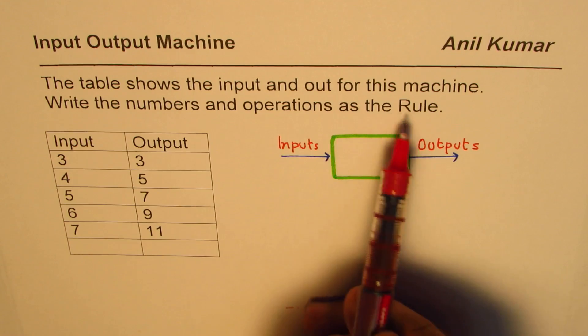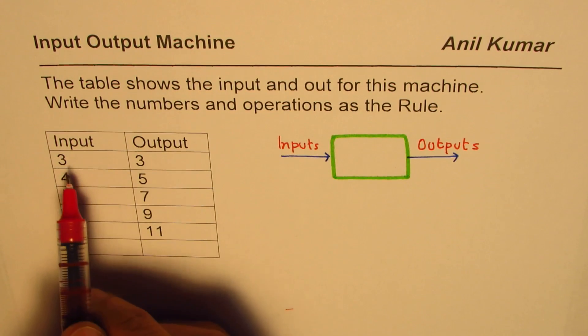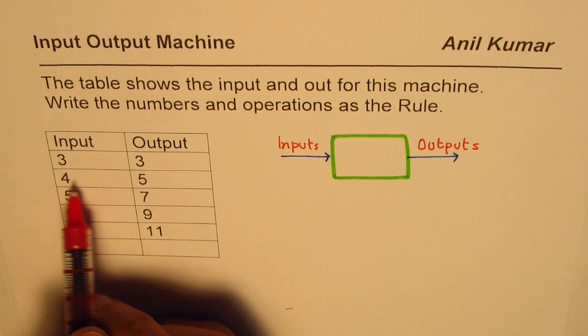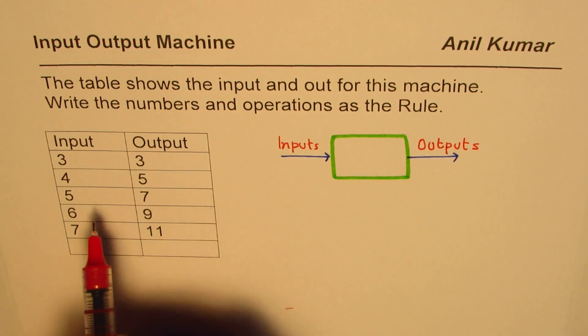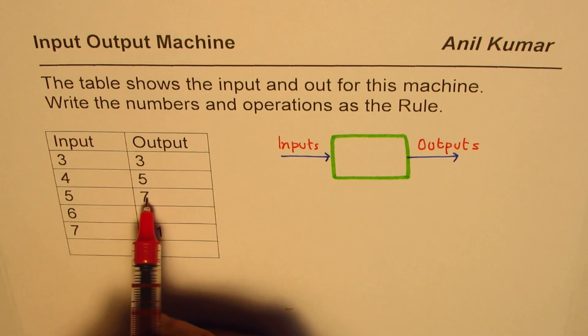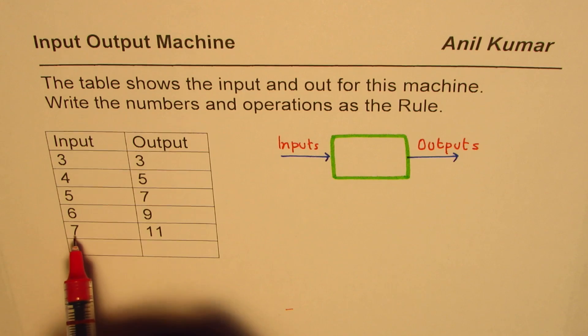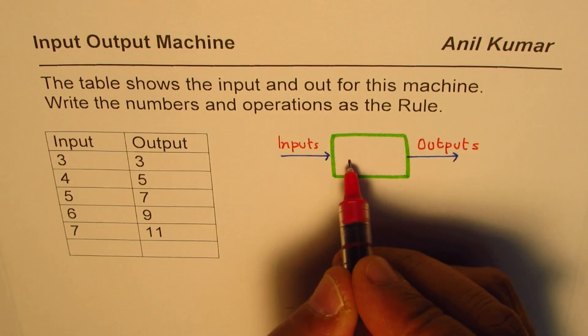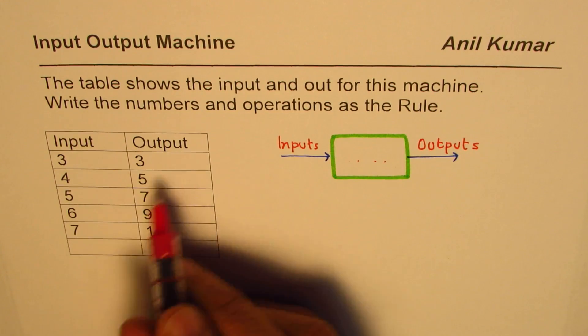When we feed in 3 we get 3 as the output. If we feed in 4 we get 5 as the output. For 5 we get 7, for 6 we get 9, and for 7 we get 11 as the output. So what should the machine do so that we get this kind of operation? How to find that rule - that is the main criteria.